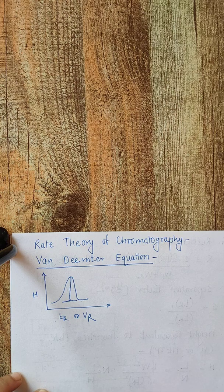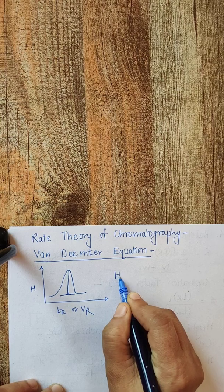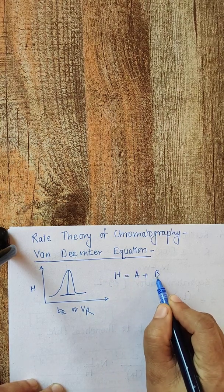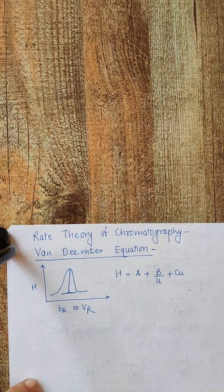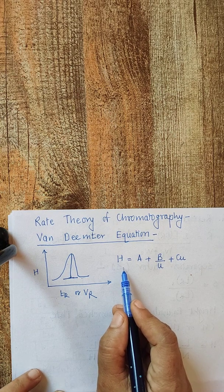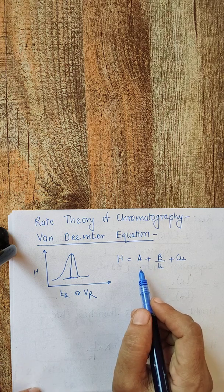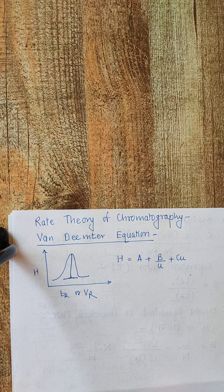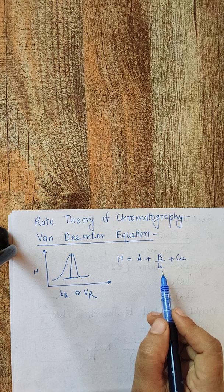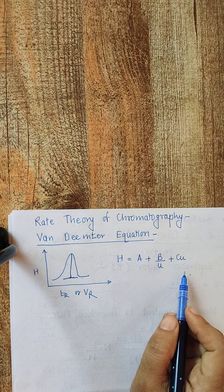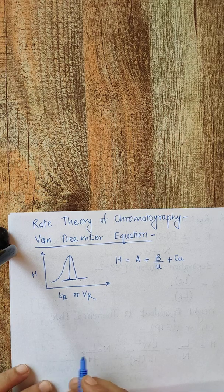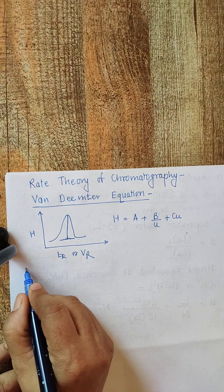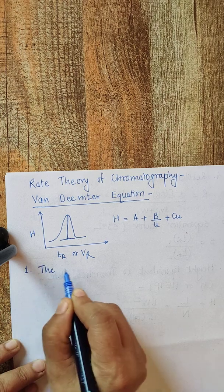The Van Deemter equation is expressed as H = A + B/u + Cu. Here H is the height equivalent to a theoretical plate (HETP). A is the first variable — the multi-path term, also known as eddy diffusion. B/u is the longitudinal diffusion term. Cu is the mass transfer term. The C coefficient is further split into two parts: one for the stationary phase and one for the mobile phase.